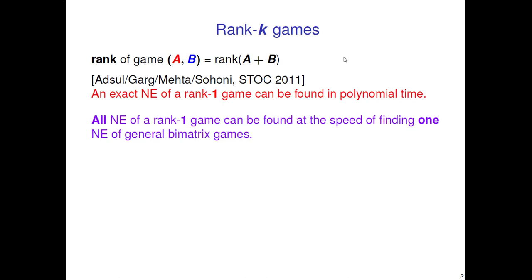The bimatrix game is the most basic model in game theory where you have two players, and they individually select an action - a row for the row player, a column for the column player. Then there are two matrices which have the payoffs of the two players. The corresponding entry of A is given to player one, the entry of B to player two. It's a zero-sum game if the sum of the two matrices is the zero matrix. You can generalize: if the sum of the matrices has a bounded rank, then this is called a game of that rank.